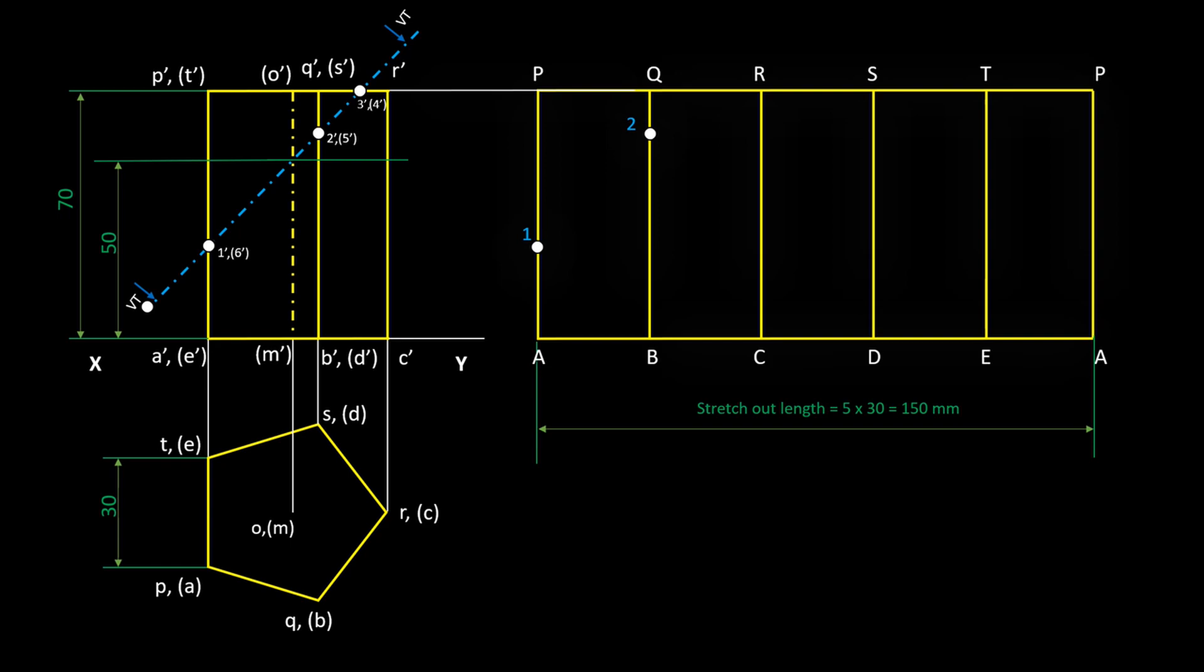Project point 2 to the edge BQ. So point 3 will be in between the corners Q and R. We can find the true length or true distance between Q and 3 from the top view. Project the point 3 to the top view. Measure the value from point Q to point 3 and mark on the pattern from point Q.